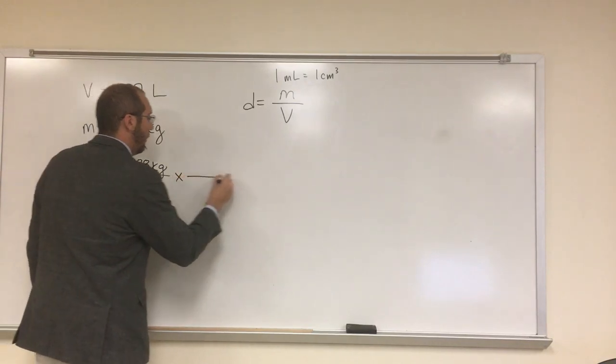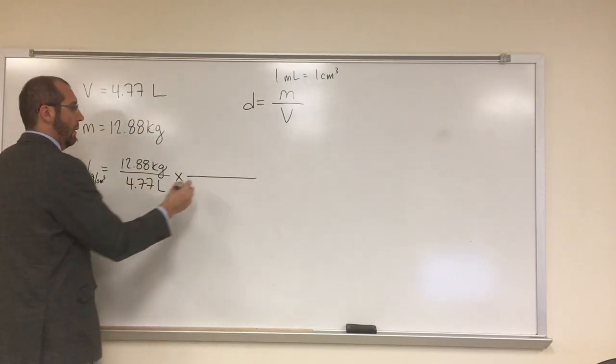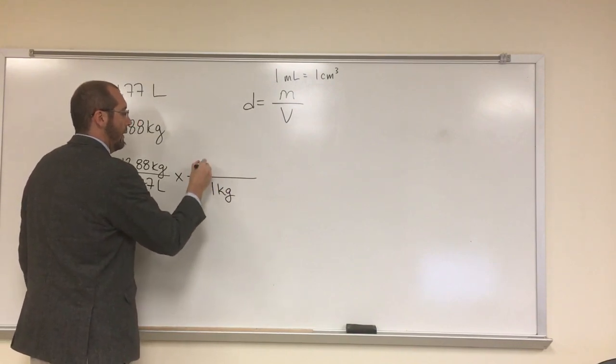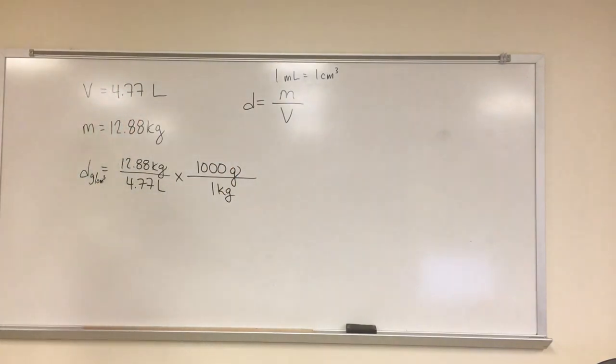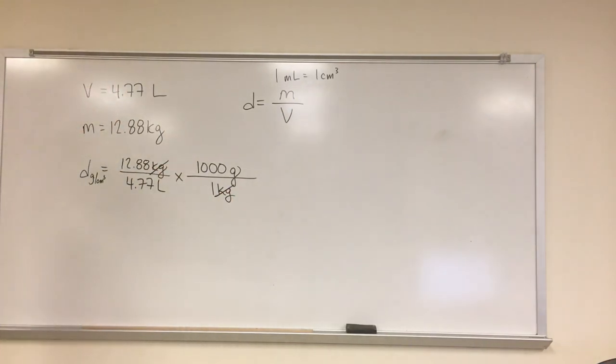So, first thing we're going to multiply. Let's get rid of the kilograms, right? So, what do we put on the bottom? One kilogram. And on the top? One thousand grams, remember, the units are also important. So, keep that in mind. When we do that, that cancels out kilograms. Is everybody okay with that?